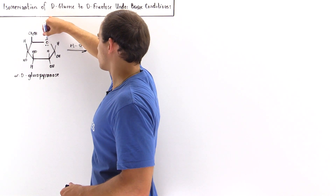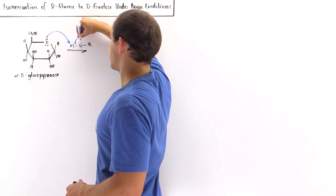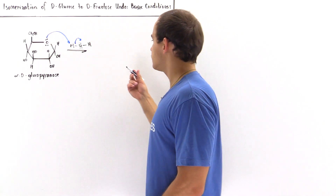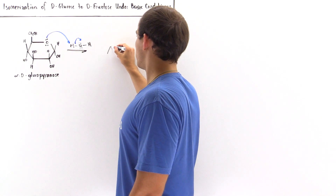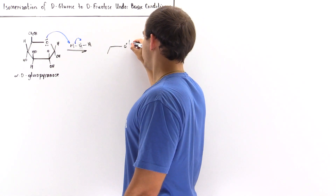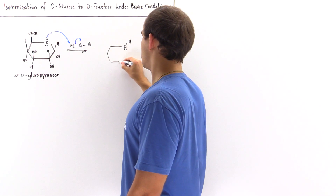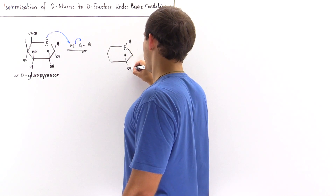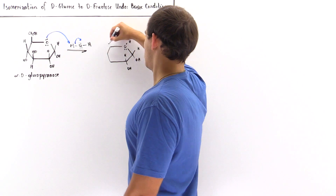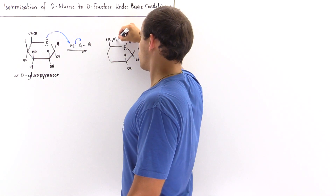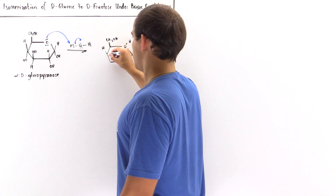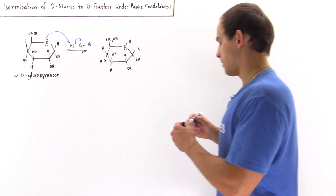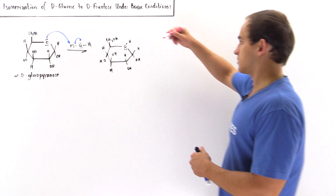The water acts as our Lewis base, grabbing this H and taking away these two electrons, placing them onto this oxygen. We form the protonated version of this molecule. We have an H here, the rest of the molecule with H, OH, OH, H, primary alcohol group, H pointing up, OH pointing down, OH pointing up, H pointing down, and a positive charge on our protonated oxygen.